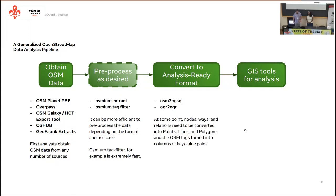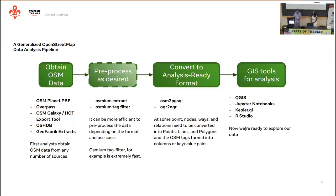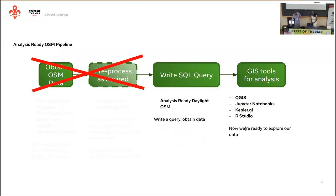Ultimately, you're going to have to do this conversion — usually an import tool runs this in the background — which turns OSM data, nodes, ways, and relations, into points, lines, and polygons, something that geospatial analysis tools are used to dealing with. Then finally, we import that data into a tool like QGIS, notebooks, or visualization tools, whatever your preferred stack is. This is the most generic version of the OSM data science pipeline, and this is what the Daylight Analysis Ready distribution is trying to simplify.